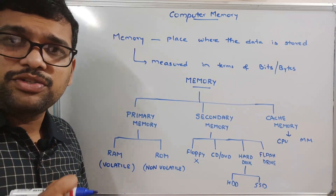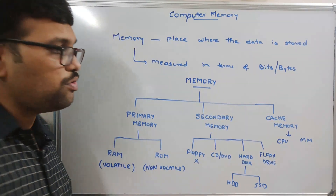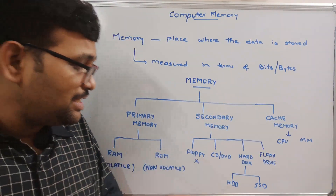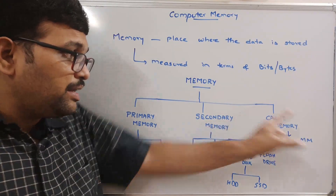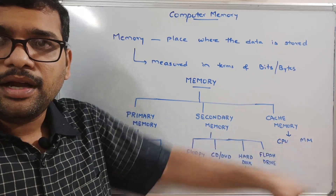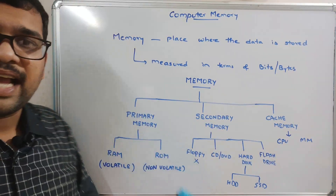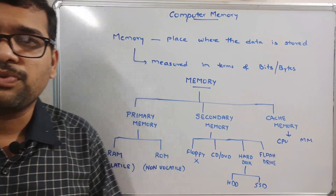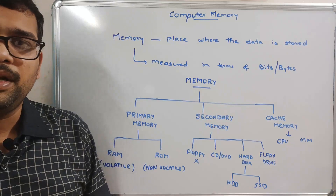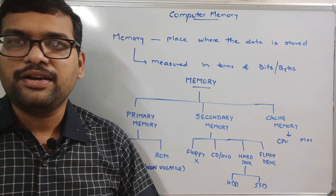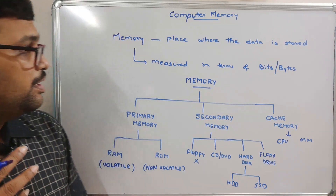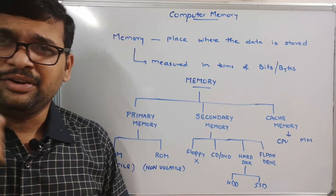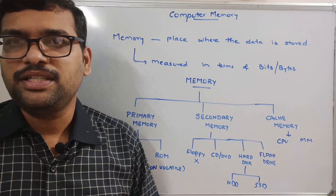For fast execution, all frequently used data will be stored in cache memory. I hope you understood this overview. In the next session we'll see the types of RAM, types of ROM, and the different levels of cache memory. If you have any doubts regarding computer memory, feel free to post in the comment section. If you found this session helpful, please like, share, and subscribe to our channel. Thank you very much.